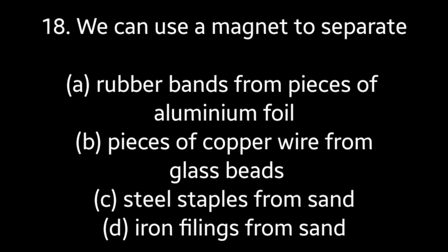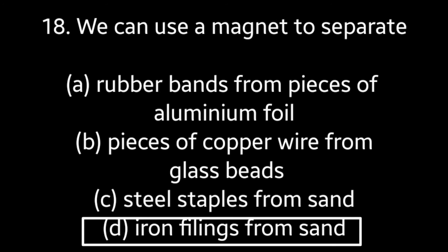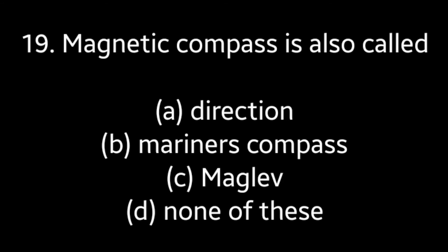Question number eighteen: we can use a magnet to separate — rubber bands from pieces of aluminum foil, pieces of copper wire from glass beads, steel staples from sand, or iron filings from sand? Answer is option D: iron filings from sand. Question number nineteen: the magnetic compass is also called — direction compass, mariner's compass, markle, or none of these? Answer is option B: mariner's compass.